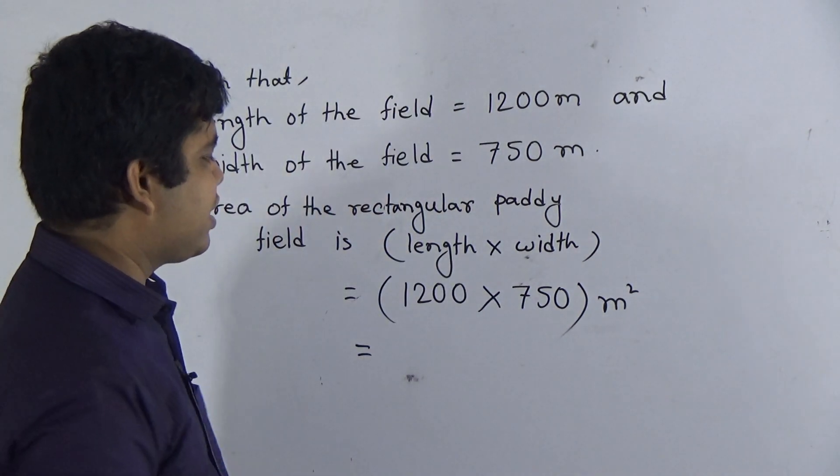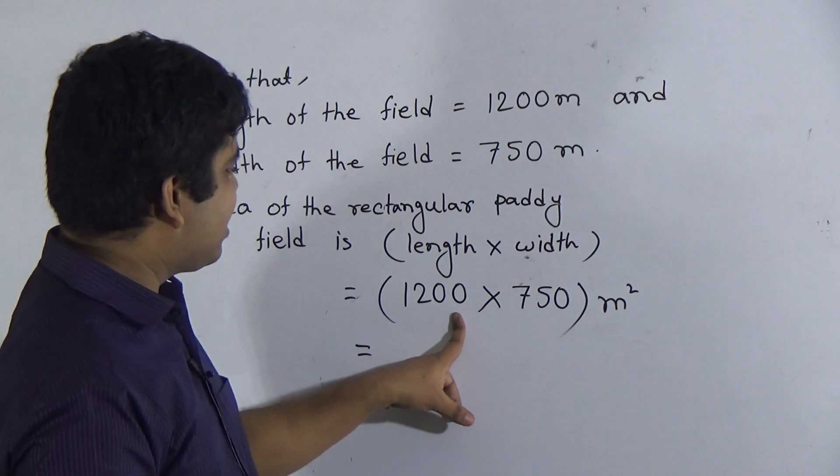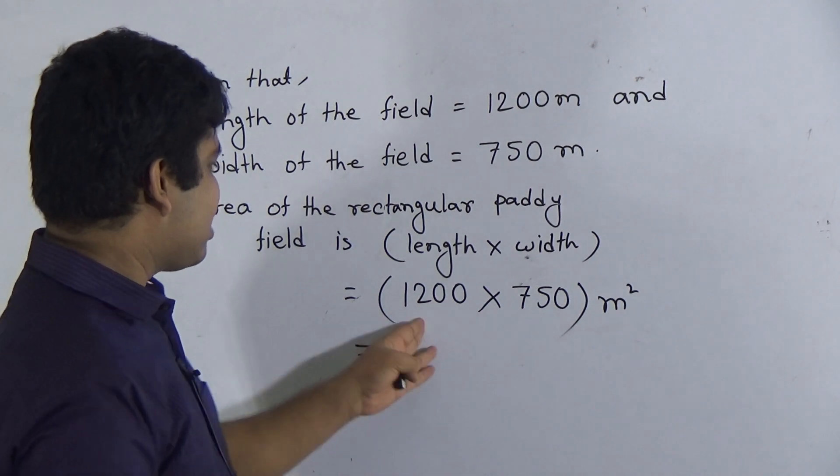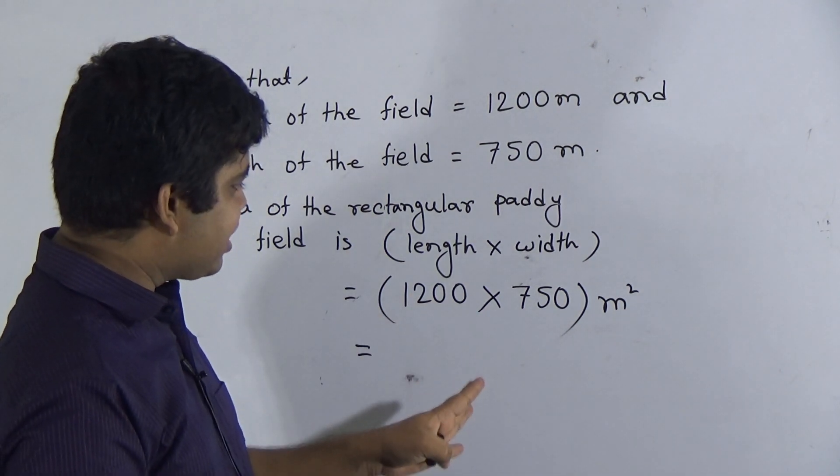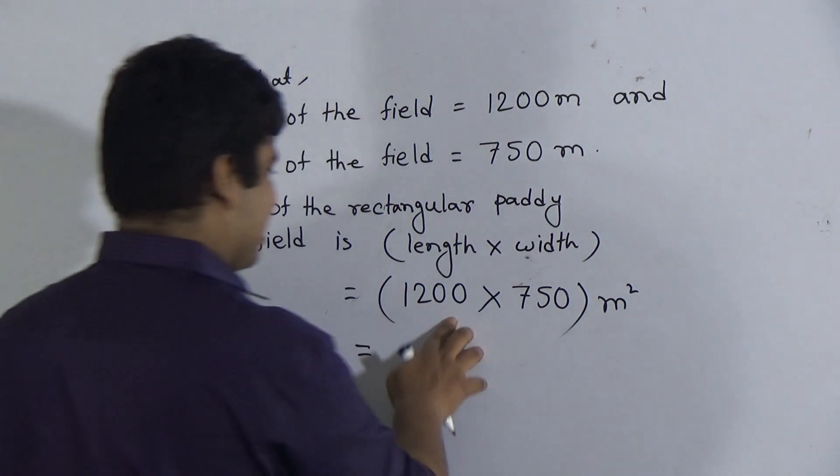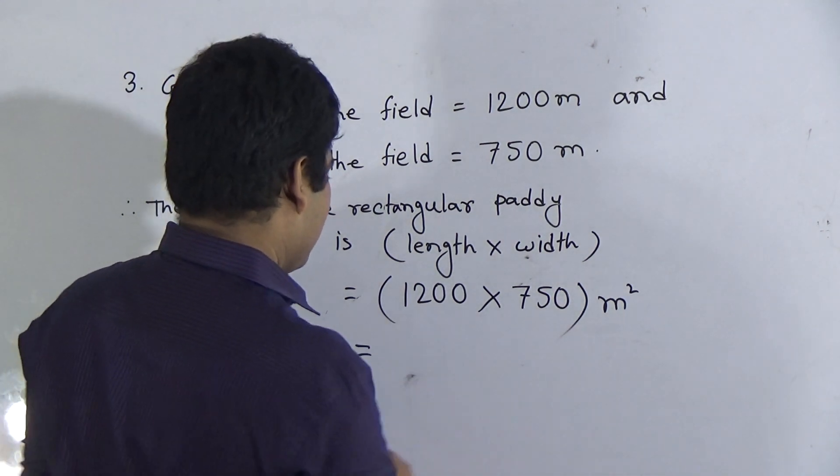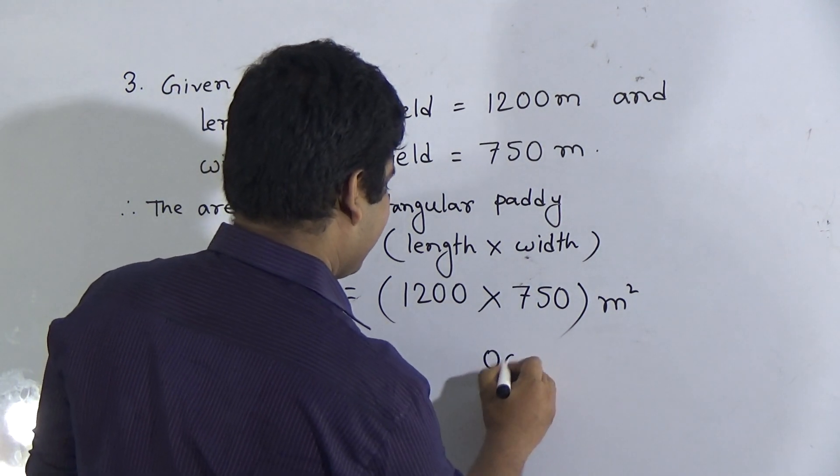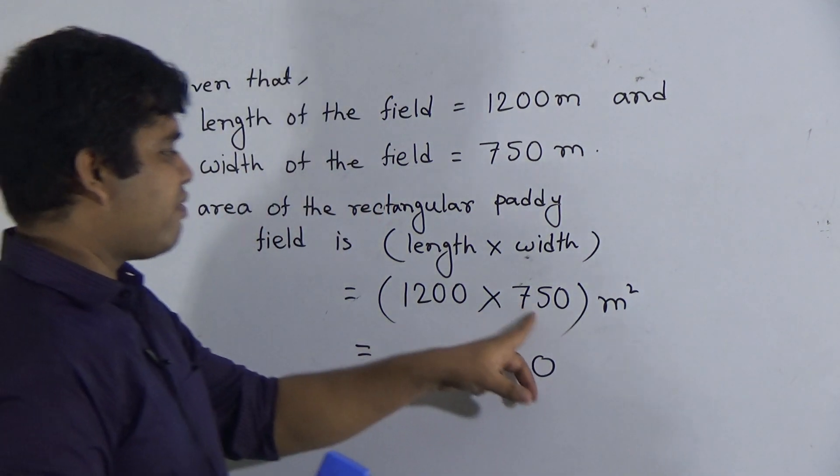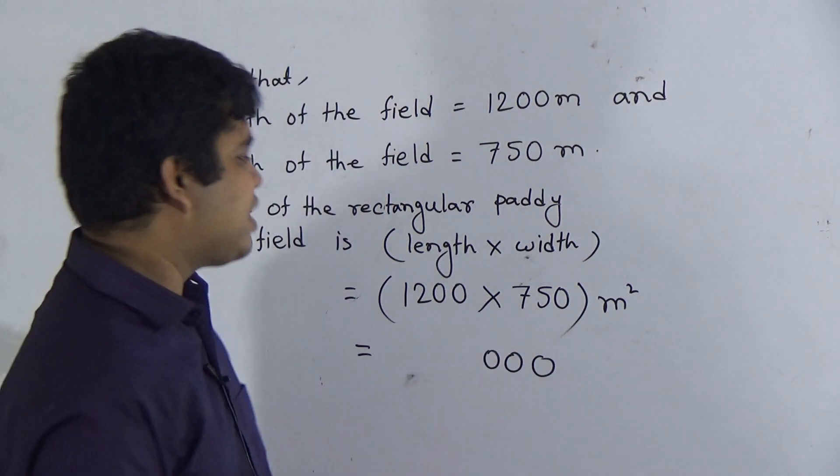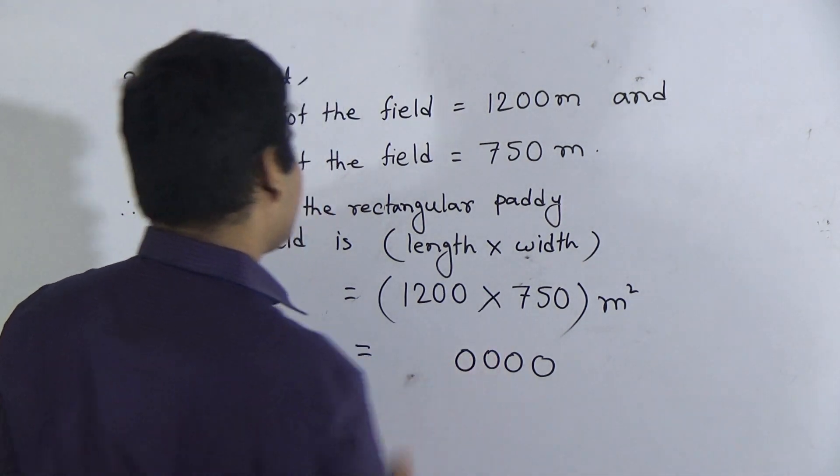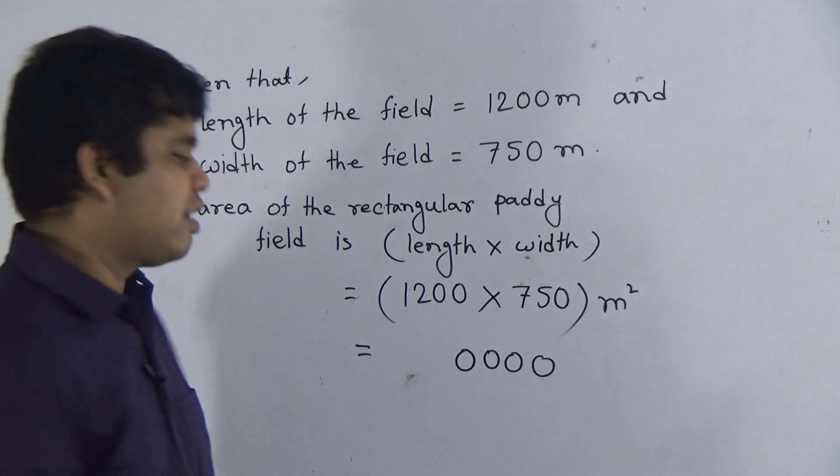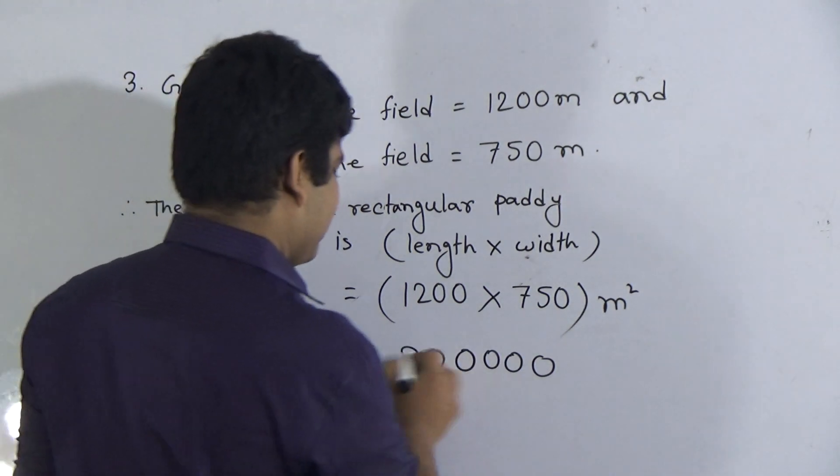Now, we do multiplication. My dear students, you can multiply by easy process or you can show this multiplication here. But here we do the multiplication by using easy process. 1, 2, 3. This 0 is written here. Now, we multiply this 75 by 12. 12 times 5 is 60. From 60, I write here 0, carrying 6. 12 times 7 is 84. 84 and 6 is 90. So, we write 90.